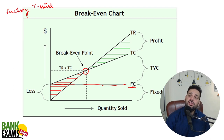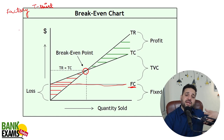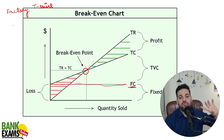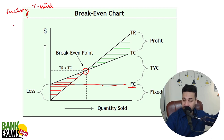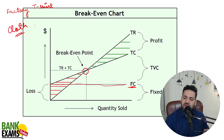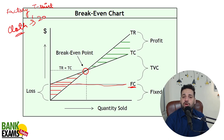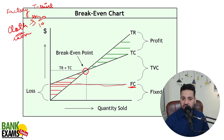For every additional unit of production, you need to make additional expenses. For example, to make a t-shirt you need cloth — for every additional t-shirt produced, you need to spend let's say 20 rupees on cloth and 10 rupees on labor. These are your variable expenses — per unit variable expense.